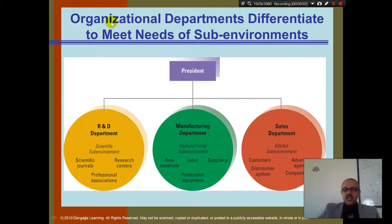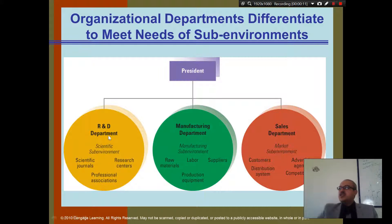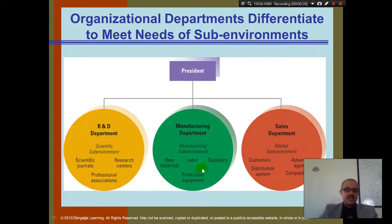Organizational departments differentiate to meet the needs of subdivisions. Here we have the president of the company with three departments. The R&D department does research and development in a scientific sub-environment with scientific journals, professional associations, and research centers. The manufacturing department has raw materials, labor suppliers, and production equipment. The sales department includes customer distribution centers, advertising agencies, and competitors.